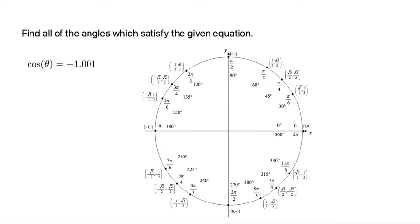This problem says find all of the angles which satisfy the given equation. The equation that's given is cosine of theta is equal to negative 1.001.